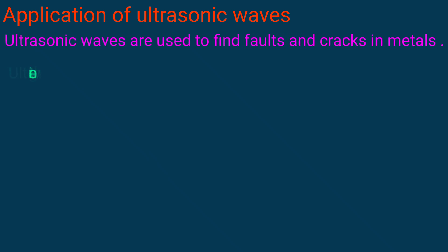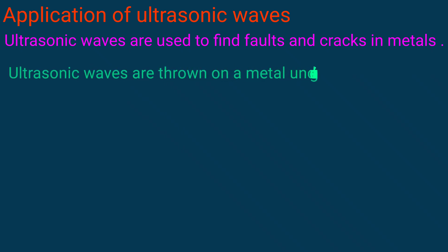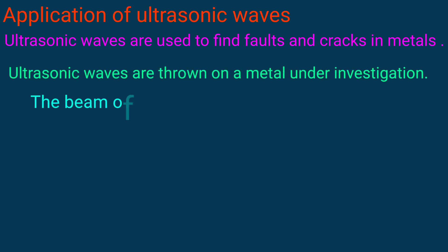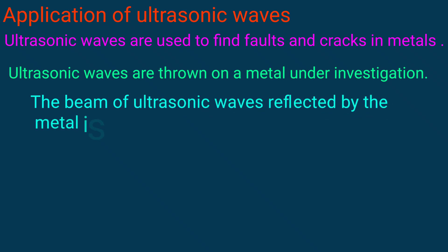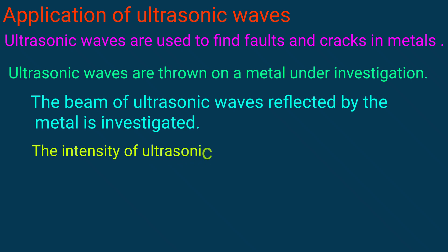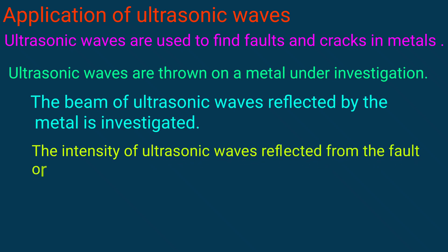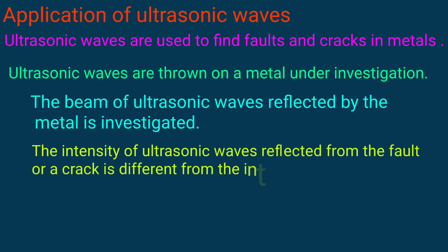Ultrasonic waves are used to find faults and cracks in metal. Ultrasonic waves are thrown on a metal under investigation, and the beam of ultrasonic waves reflected by the metal is investigated. The intensity of ultrasonic waves reflected from a fault or crack is different from the intensity of the wave reflected from other parts of the metal.